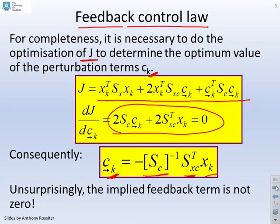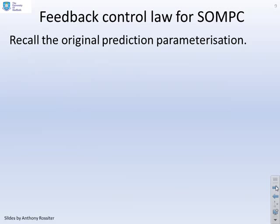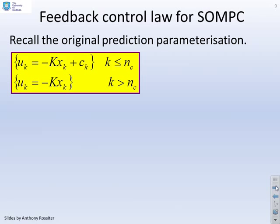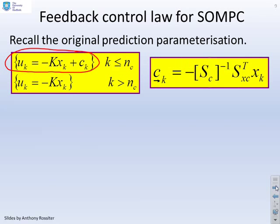Now, what you'll find in this case is the implied perturbation is not zero because we've no longer got the Sxc equals zero. So if I put all this together, you'll remember that in the transient mode, this was our predicted feedback law, U equals minus Kx plus C.